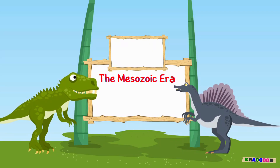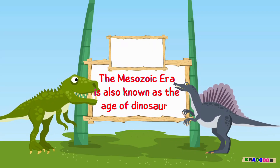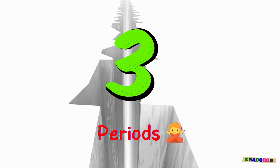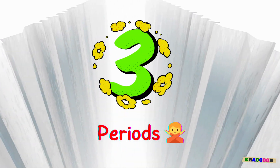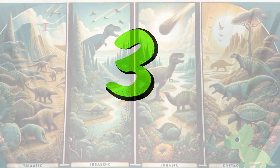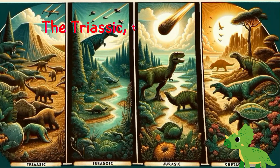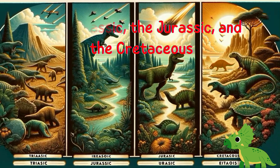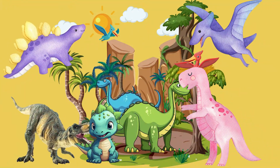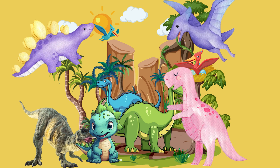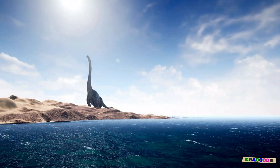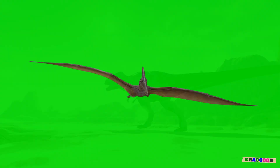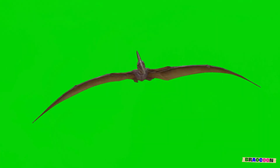The Mesozoic Era is also known as the Age of Dinosaurs. This era is divided into three periods: the Triassic, the Jurassic, and the Cretaceous. Each period had its own unique dinosaurs and landscapes. Imagine a world where giant reptiles roamed the land, the skies, and the seas.